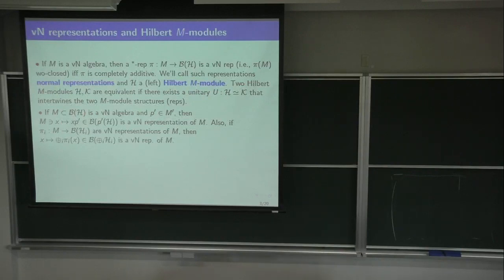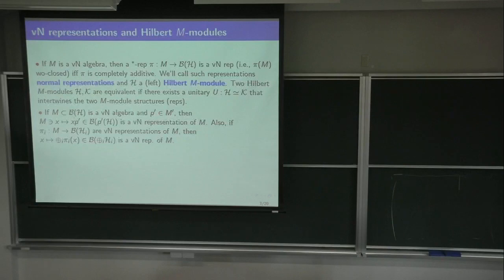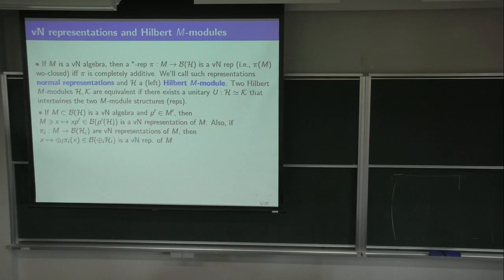The other observation is that I'm constructing from one such von Neumann representation two types of reps. If M is a von Neumann algebra with a von Neumann rep, and you take a projection in the commutant of M, then the map taking X to X·P′ in B(P′H) is obviously normal and is a von Neumann representation of M. If M is a factor, it will automatically also be faithful.